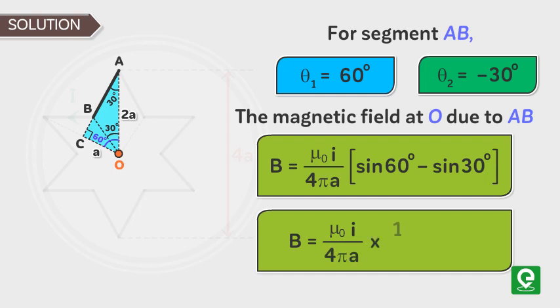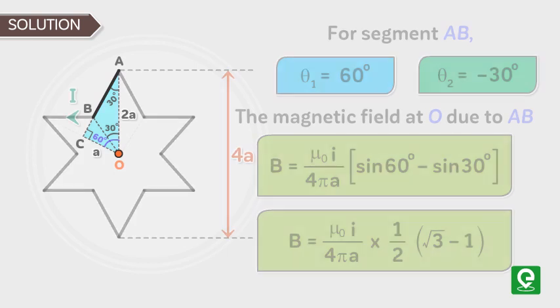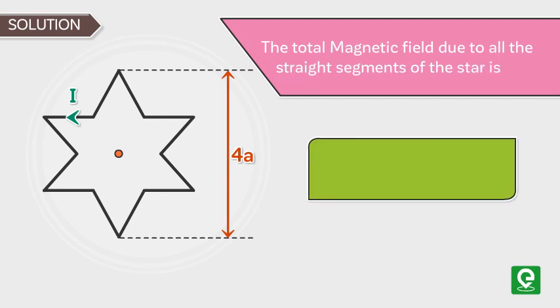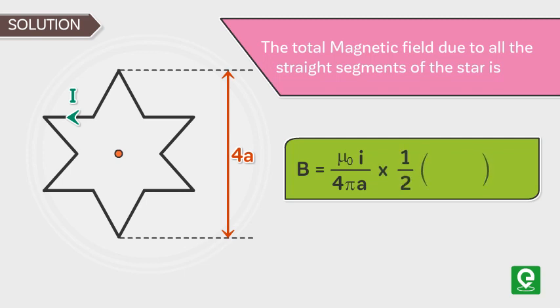The total magnetic field due to all the straight segments of the star is mu naught I upon 4 pi a into 1 by 2 into root 3 minus 1 into 12, which is equal to mu naught I upon 4 pi a into 6 root 3 minus 1. Therefore correct answer is option A.